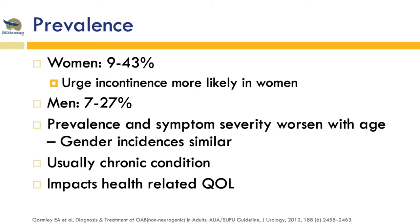The prevalence of OAB is quite high worldwide. In women it's estimated to be about 9 to 43 percent, and notably OAB wet is more common in women than in men. In men the prevalence is slightly lower, about 7 to 27 percent, and in both men and women the prevalence and severity of symptoms tends to worsen with age.